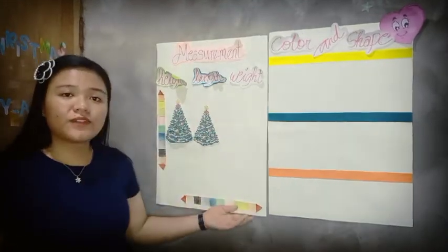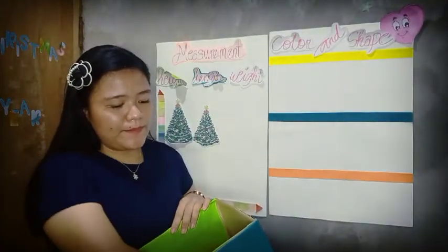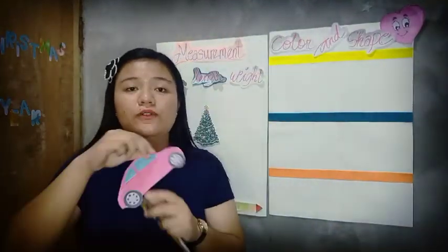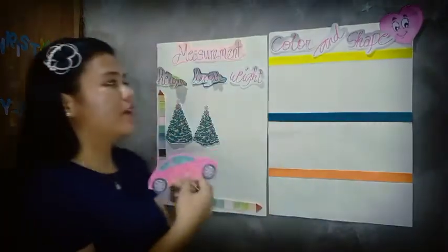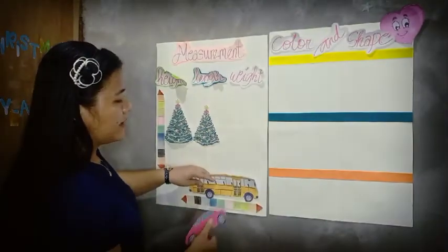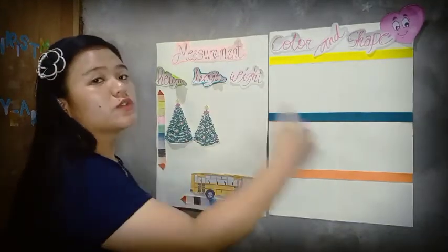Next is length. How are we going to measure an object by its length? From our magic treasure, we have two types of transportation: a school bus and a car. How are we going to measure them by length? When we measure length, we measure it from side to side to find out how long or short an object is.